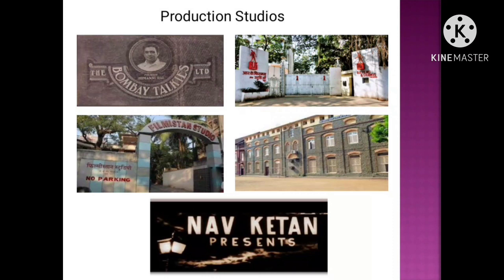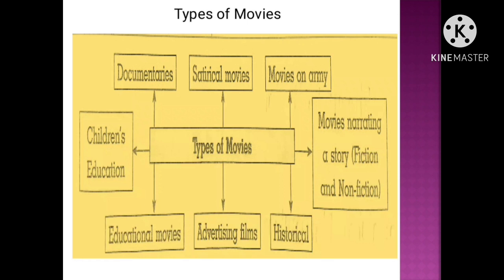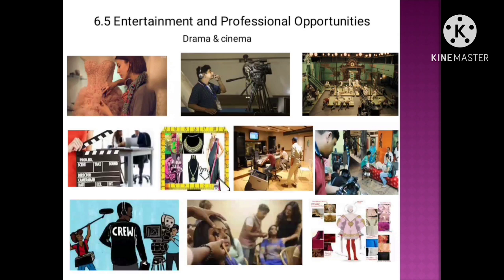Production studios include Bombay Talkies, Raj Kapoor's RK Studios, and Navketan. Types of movies include: satirical movies, movies on army themes, historical movies, advertising films, educational movies, children's educational films, and documentaries.